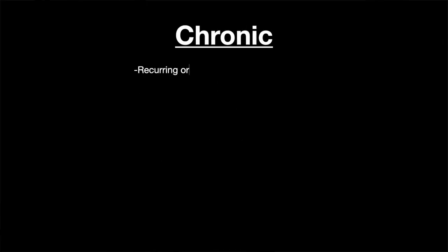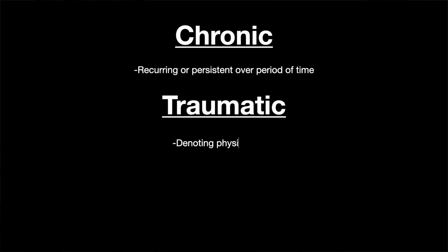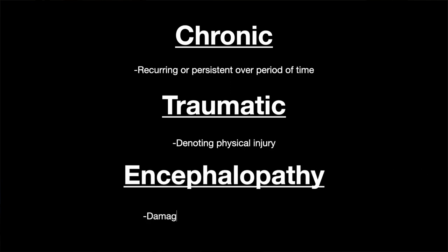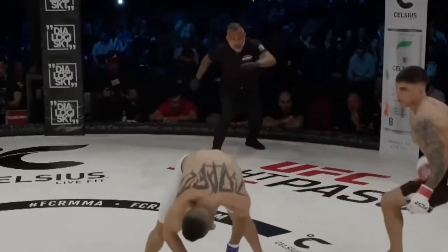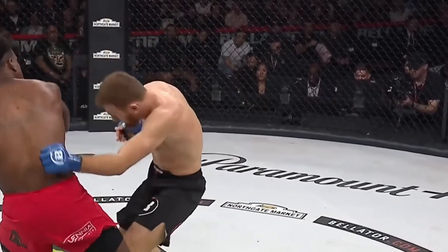Let's break down the term: chronic, meaning persistent or recurring for a long time; traumatic, denoting physical injury; and encephalopathy, meaning damage or disease that affects the brain. So basically, CTE is a series of traumatic events that happen at the level of the brain over an extended period of time.